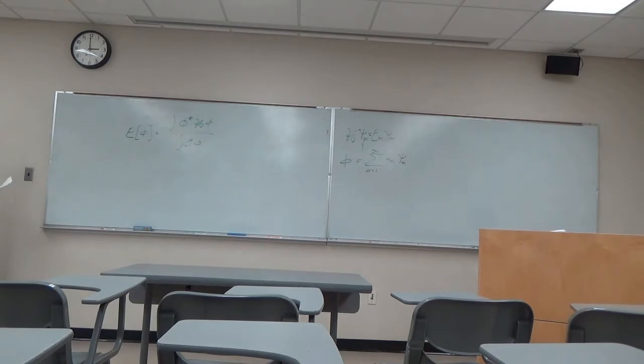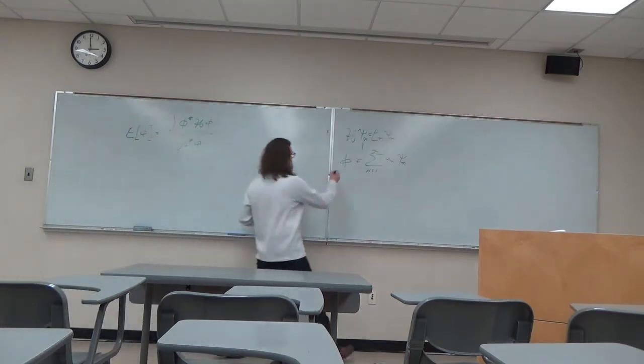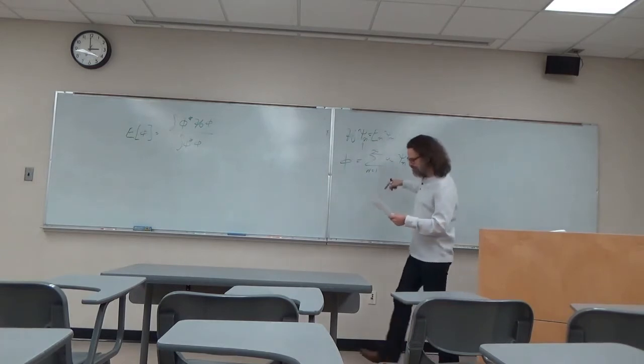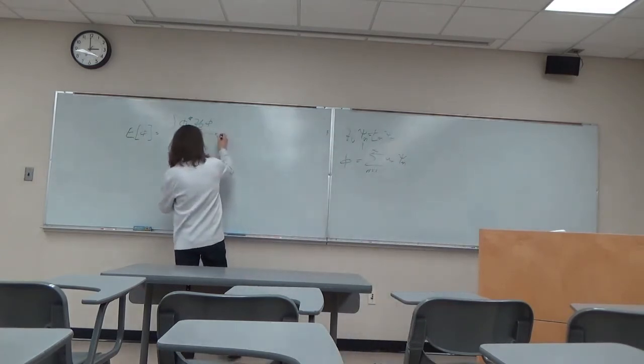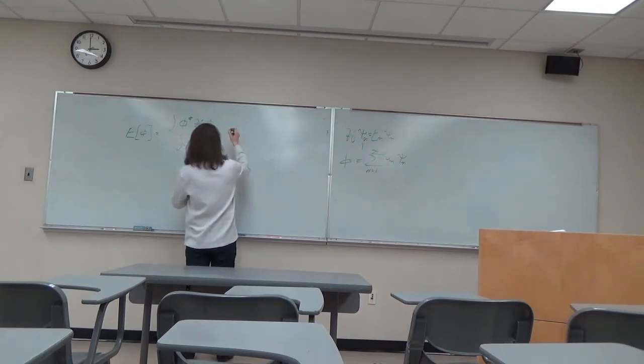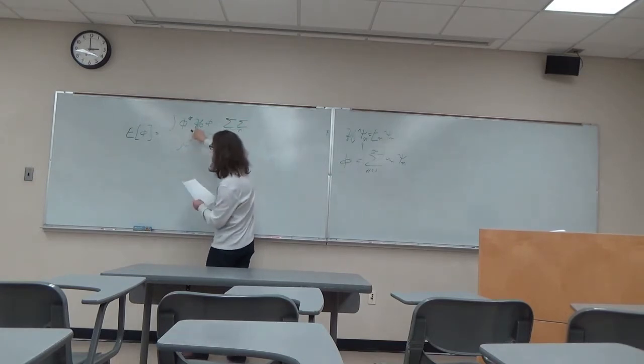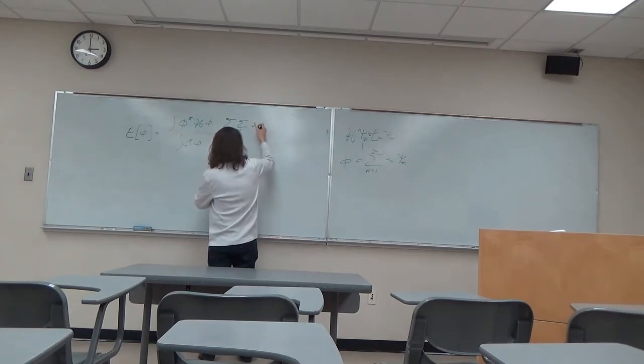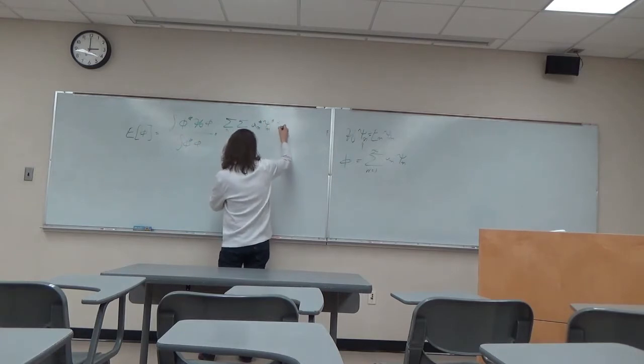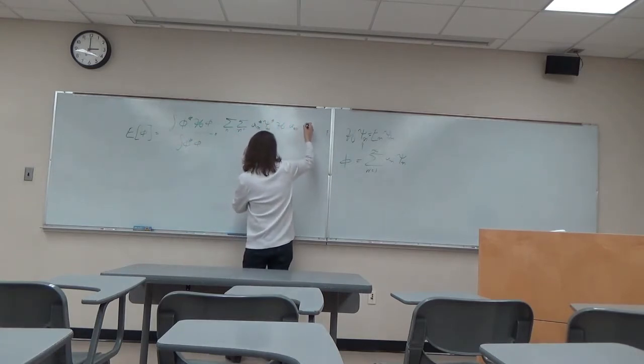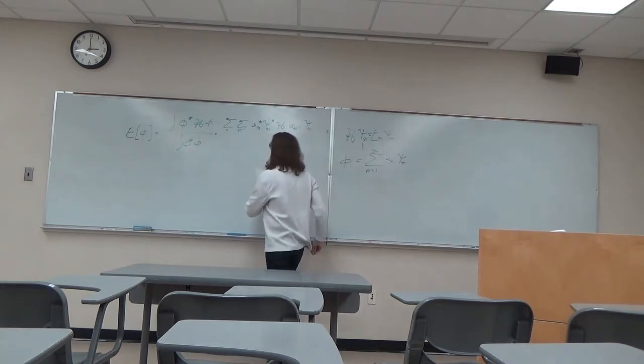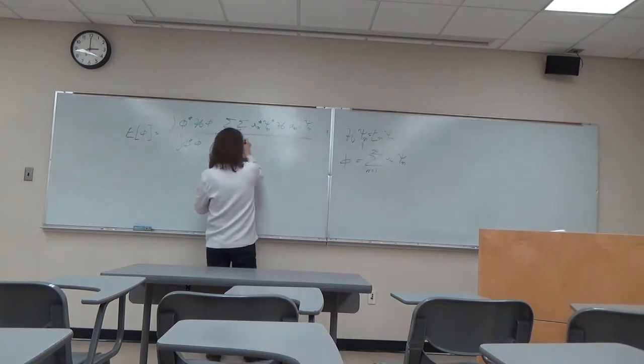So we've got that. And now we can substitute in our expansion. And substituting in our expansion, we get sum n sum n prime. So I'm doing a double sum because we've got two phi's of a n star psi n star H a n prime phi n prime